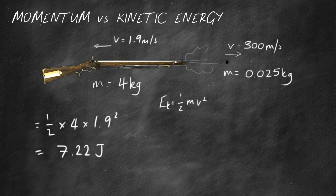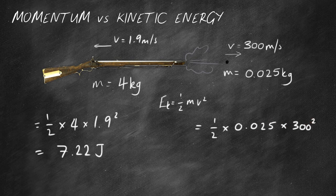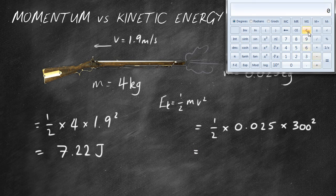Now let's have a look at the other object in this situation and calculate the kinetic energy of the bullet. So that is a half times the mass, 0.025, times the velocity, 300 squared. Now I'll go for the calculator once more. 0.5 times 0.025 times 300 squared. Wow, 1,125 joules.